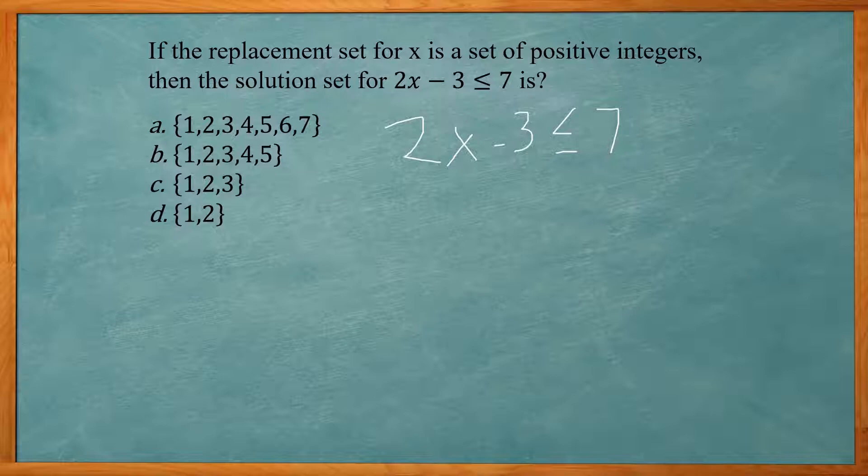So I'm going to take our 2X minus 3, less than or equal to 7. So when you solve these, like equations, I need to do the opposite. So to get rid of this subtract 3, I need to add 3 to both sides. Leaves us with 2X less than or equal to 10.